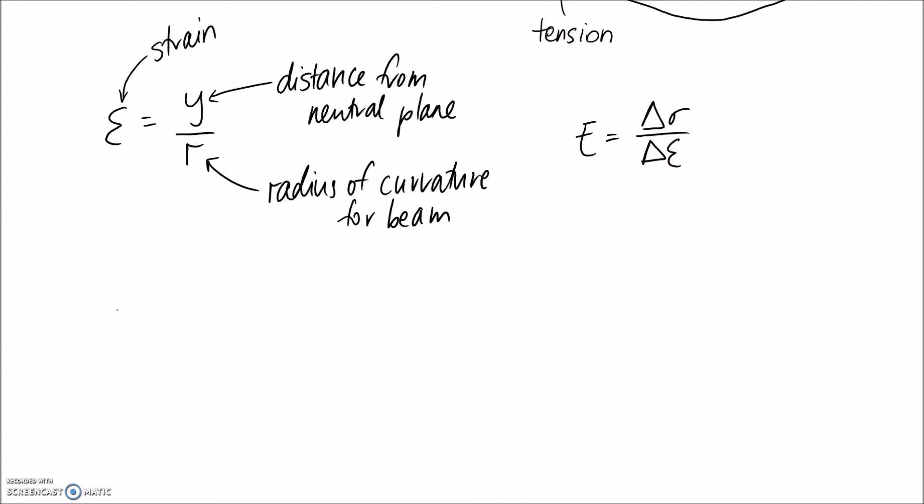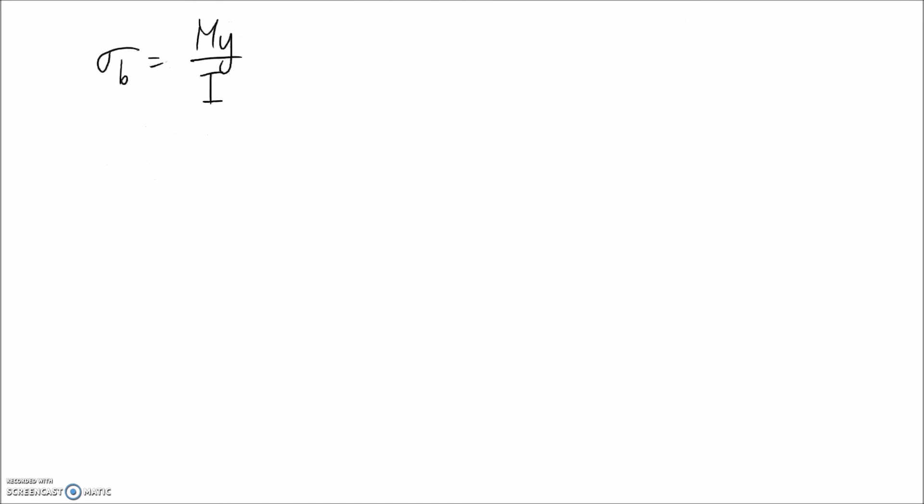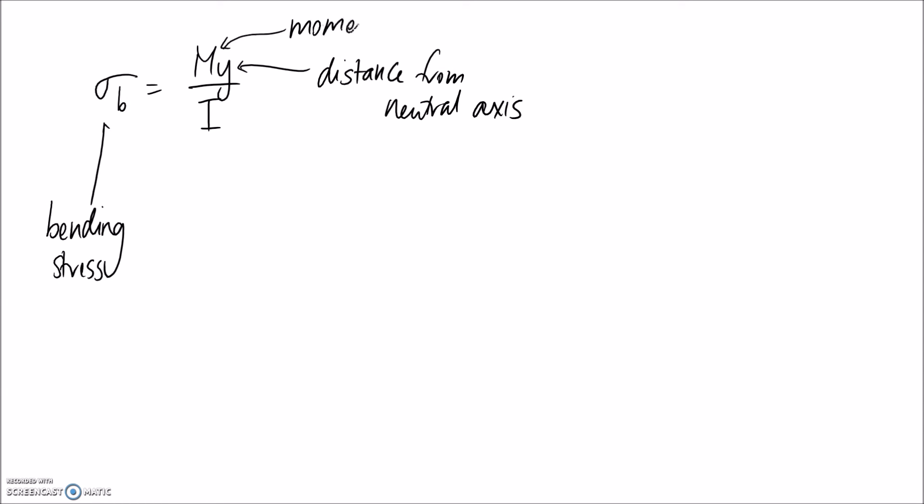More usefully, what we're interested in is the bending stress, and the equation for that is σ = My/I. So this is your bending stress. Y again is distance from neutral plane. The two new things we have: on the top line up here we have the moment at the point of interest, and on the bottom line we have the second moment of area, which relates to your cross section.